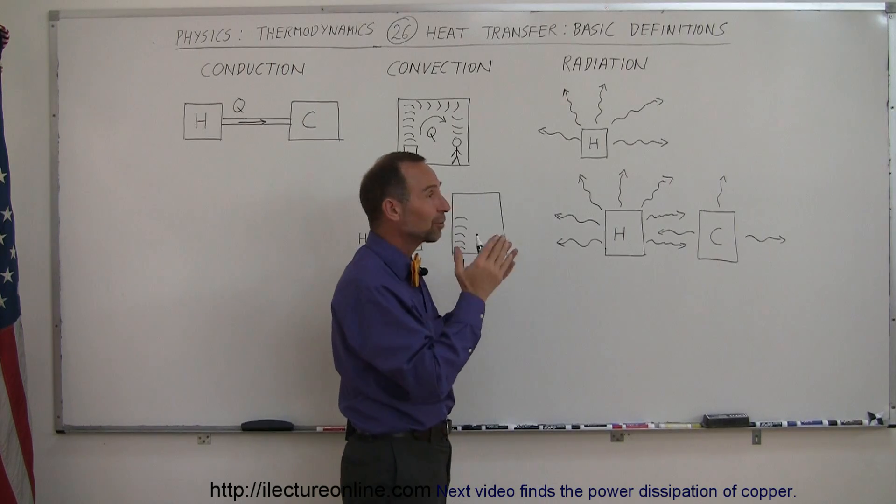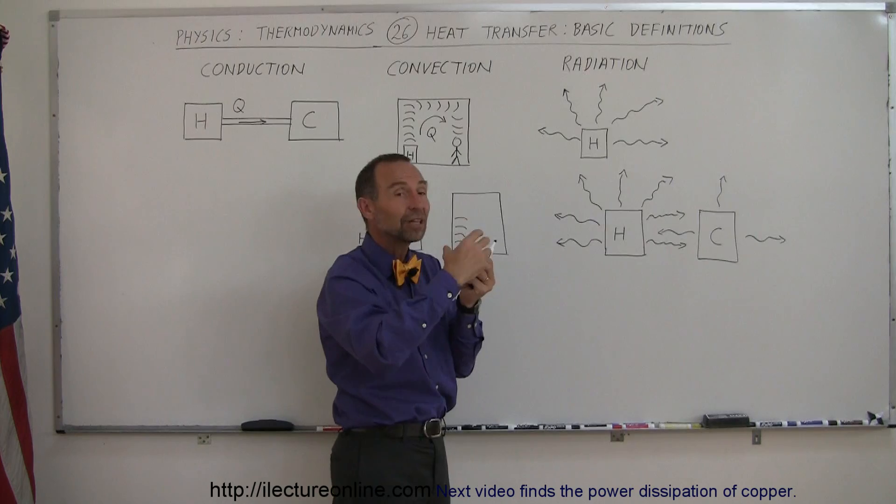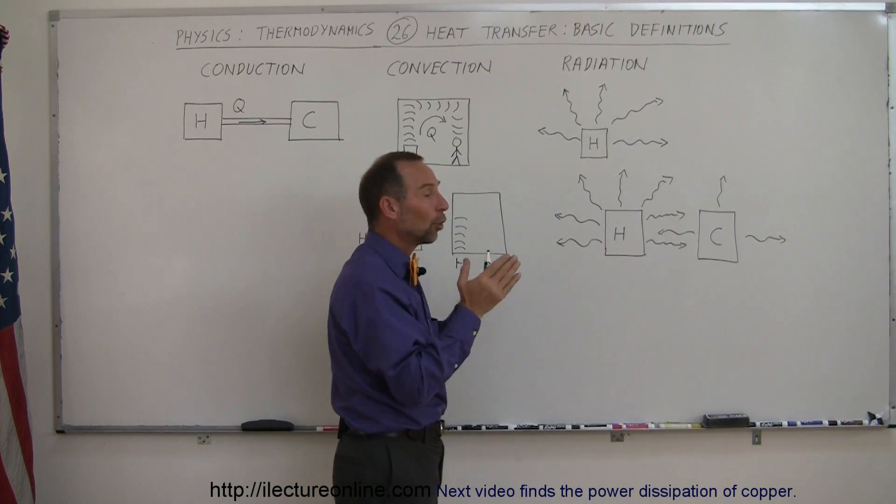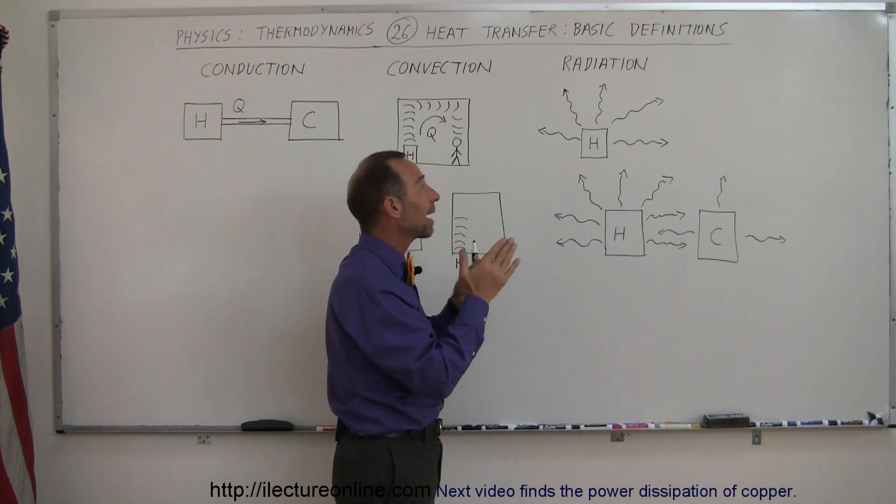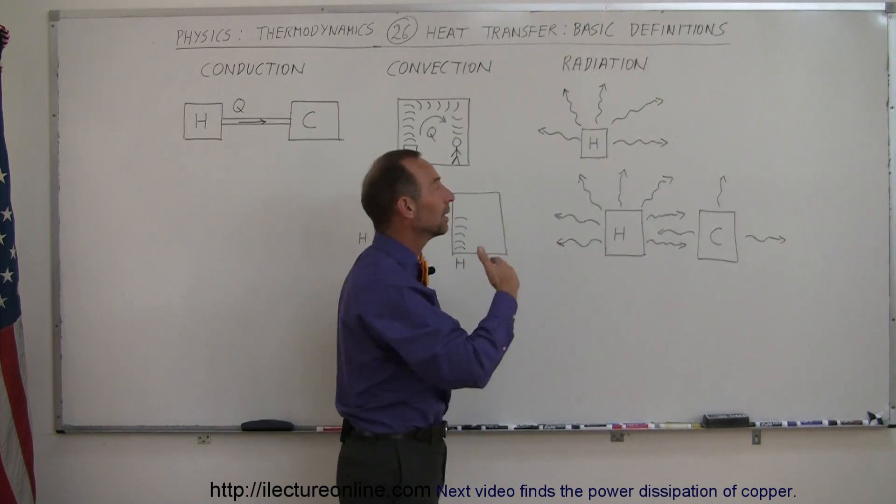In the case of radiation, it comes from the atoms within the object vibrating back and forth. Since there are associated electric fields with the vibrating atoms and molecules, those electric fields then will oscillate back and forth, which causes electromagnetic radiation to expand—not expand, but to radiate away.